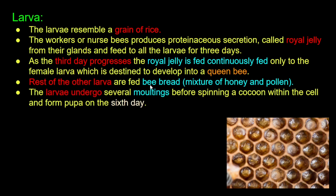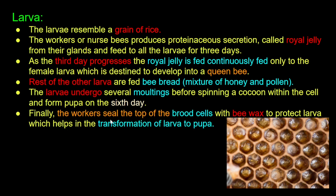The larva undergoes several moltings before spinning a cocoon within the cell and forming a pupa on the 6th day. Finally, the worker bees seal the top of the brood cells with beeswax to protect the larva, which helps in the transformation from larva to pupa.